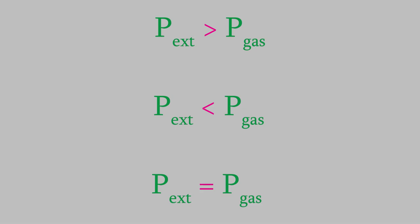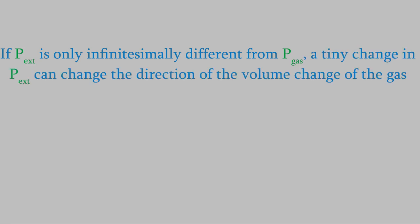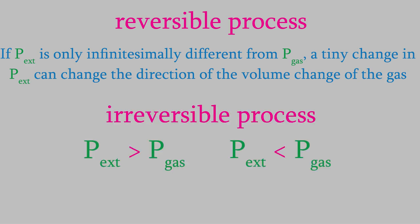What about the case where P_external is only infinitesimally different than P_gas? In that case, the volume changes only infinitely slowly, and even a very tiny change in P_external can cause the direction of the volume change to reverse itself, so that an expansion suddenly turns into a compression, or vice versa. For that reason, a process where the internal and external pressures are only infinitesimally different is called a reversible process. The other situation, where the difference in pressures is finite, is called an irreversible process.